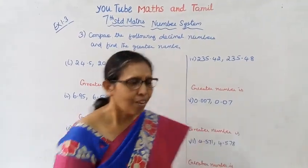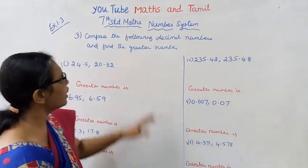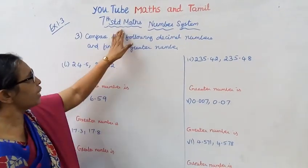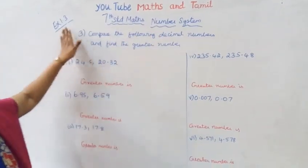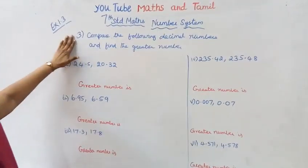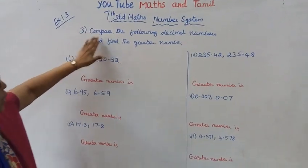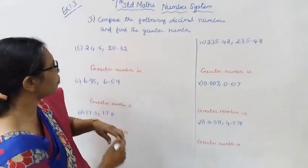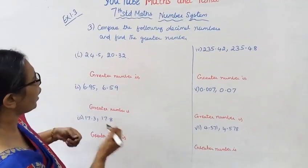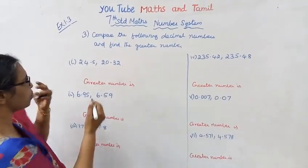Hello students, welcome to Max and Tamil channel. 7th standard, Max number system, exercise 1.3, third sum. Compare the following decimal numbers and find the greater number.